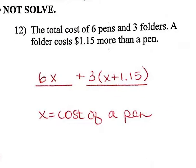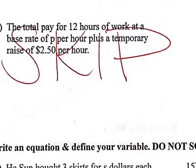Question 12: I drew two blanks — one for the cost of pens and one for the cost of folders. I know the least about pens, so X is the cost of a pen. Six pens is 6x. For three folders: a folder is $1.15 more than a pen, so each folder costs x plus 1.15, and there are three of them — so three times that entire amount. We skipped question 13; it reads in a way we haven't learned yet, so we'll come back to that later.